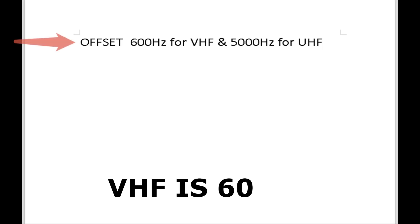Step number one is the offset. For a repeater to work it has to transmit on one frequency and receive on another frequency. The difference between these frequencies is called the offset. For VHF it's 500 Hertz and for UHF it's 5,000 Hertz.